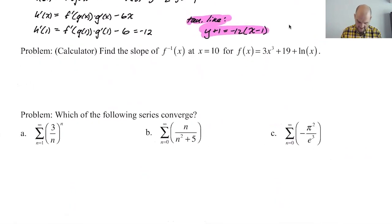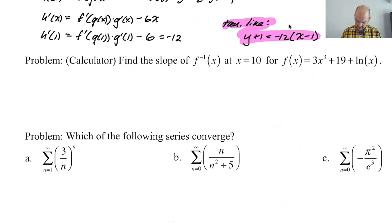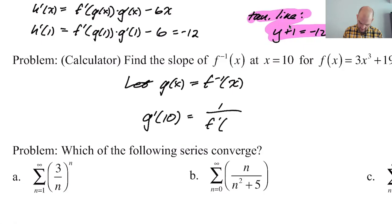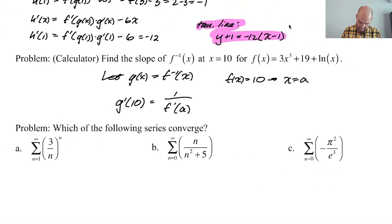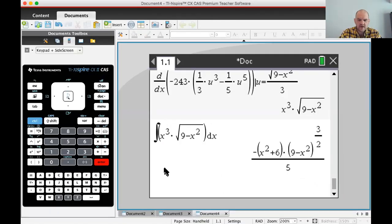Calculator problem: find the slope of the inverse function at x = 10. Let G(x) = F inverse of x. Then G'(10) = 1 / F'(a), where F(a) = 10. I need to solve F(x) = 10 for x using a calculator, since you can't do this by hand. It says calculator, so use a calculator.